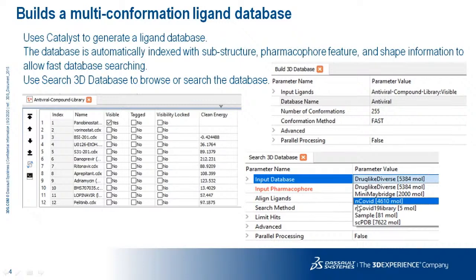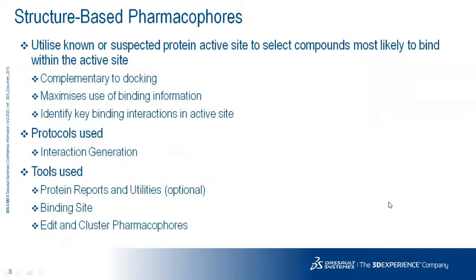Inside Discovery Studio you can see existing databases — drug-like, diverse, containing approximately 5,000 molecules — and sample compounds from the PDB database. If you want to screen with a user-specific database with multiple conformations, you go through the Build 3D Database protocol, and once done, it updates in your search database. We are using approximately 4,600 COVID molecules for our analysis. Now getting into the concept of structure-based pharmacophore — for ligand profiling, we need a structure-based pharmacophore.